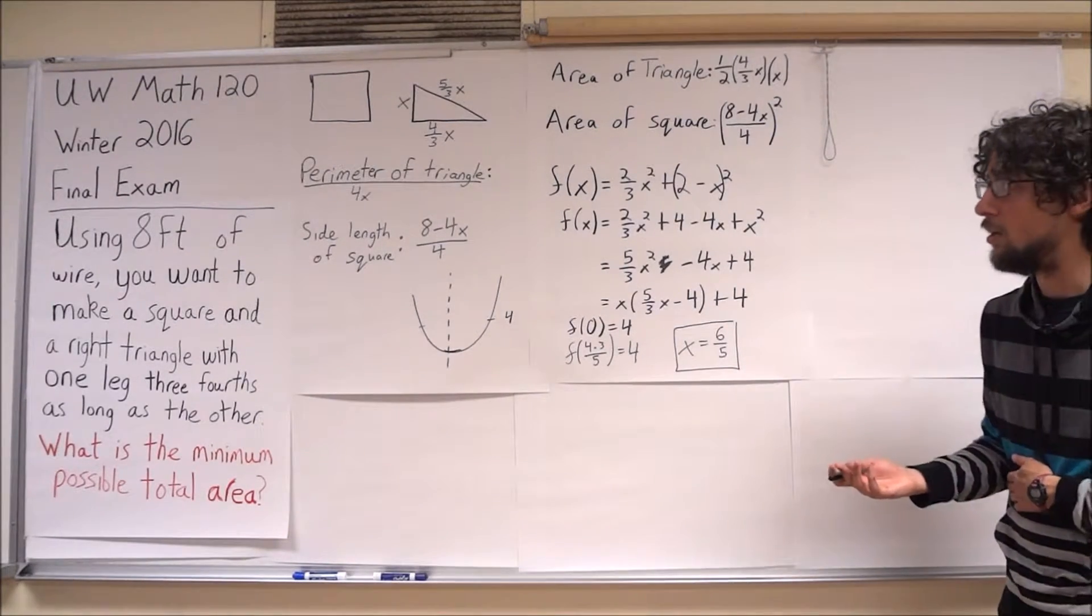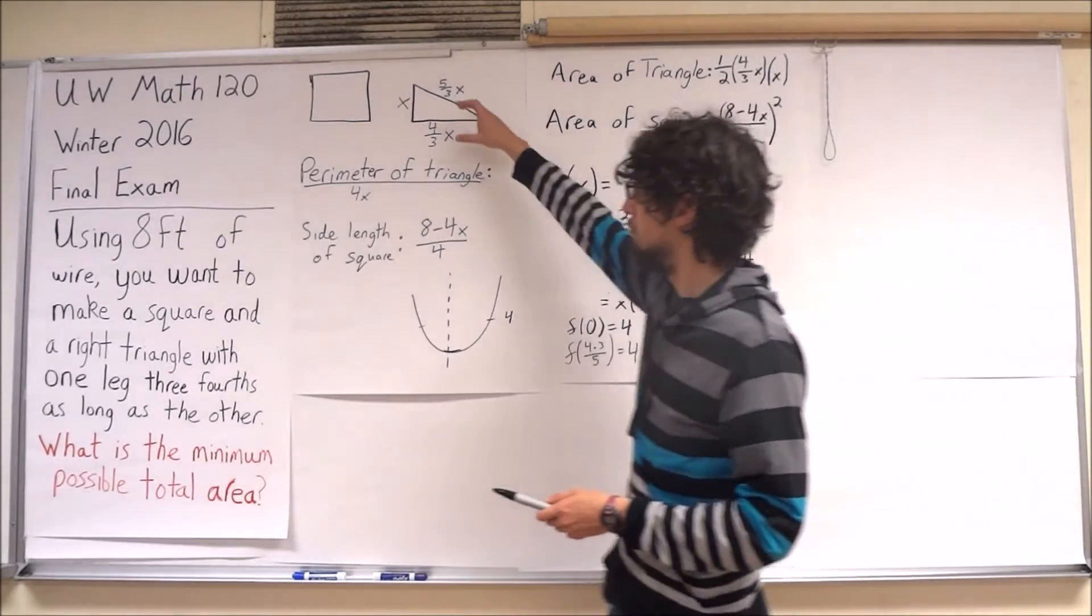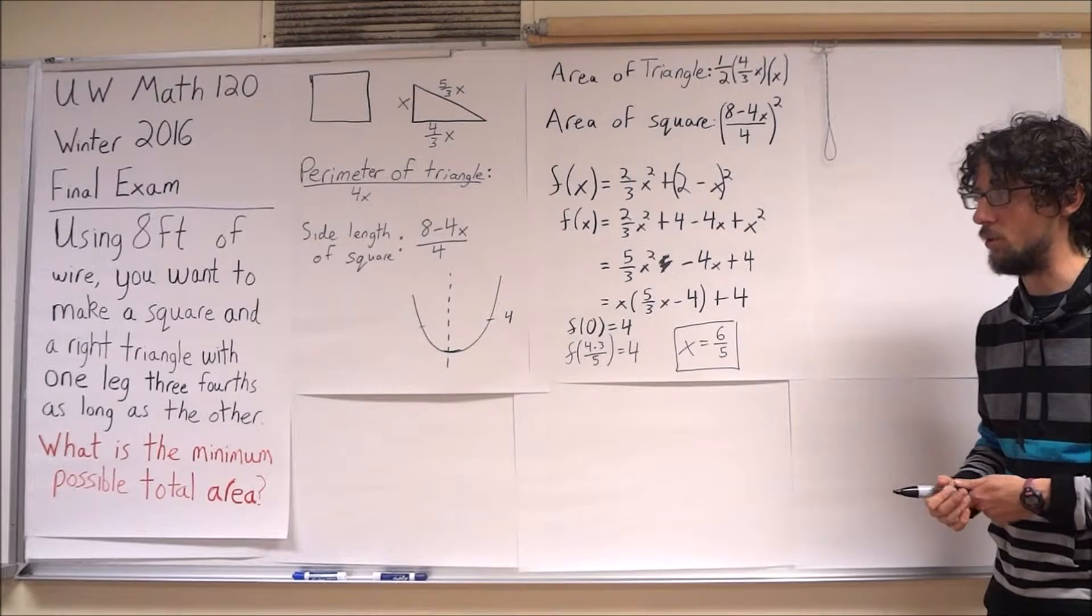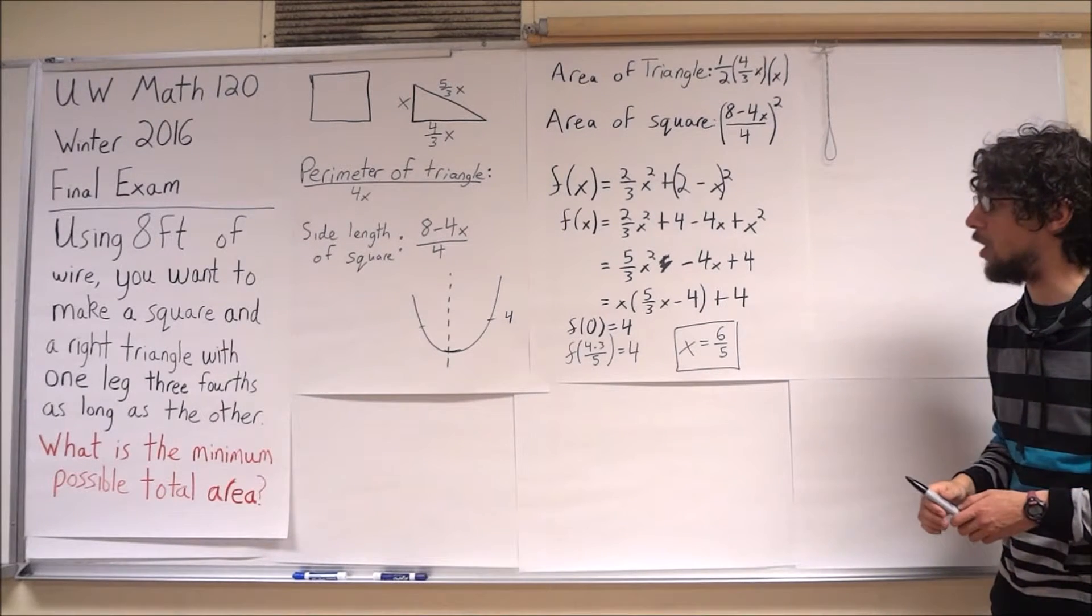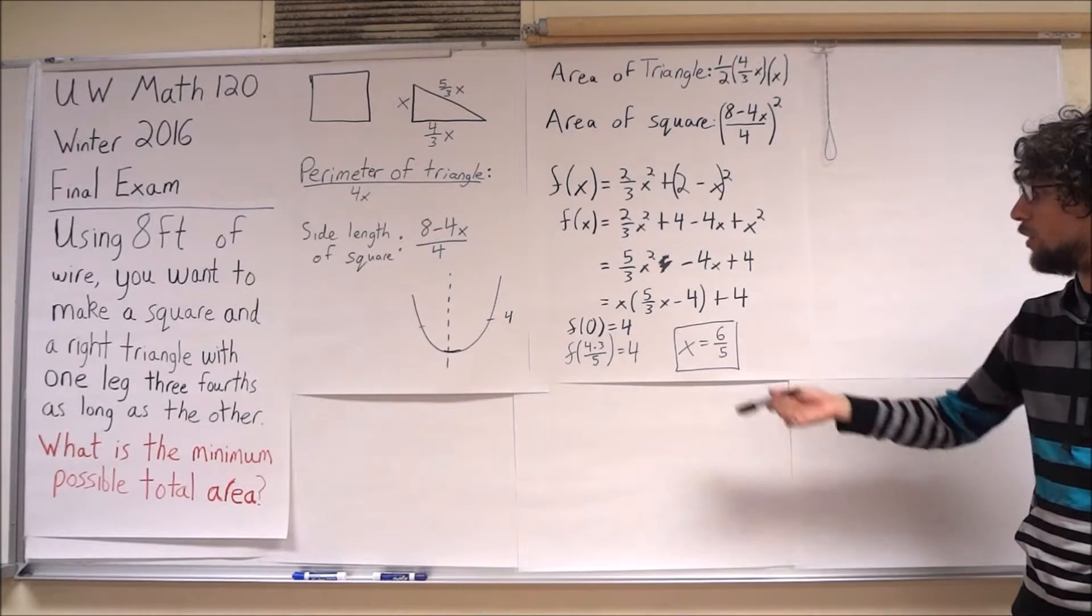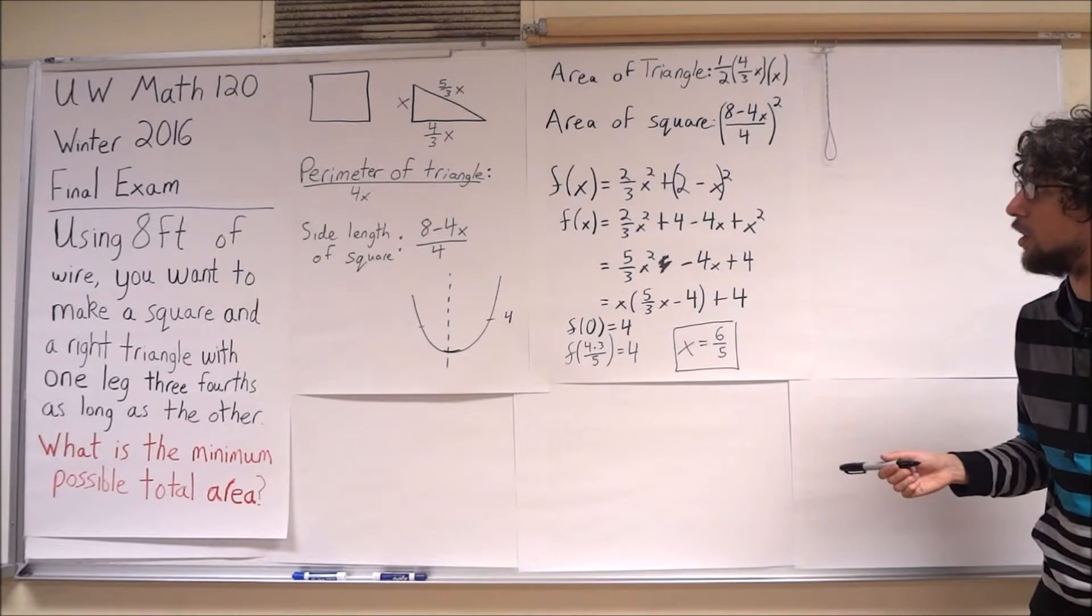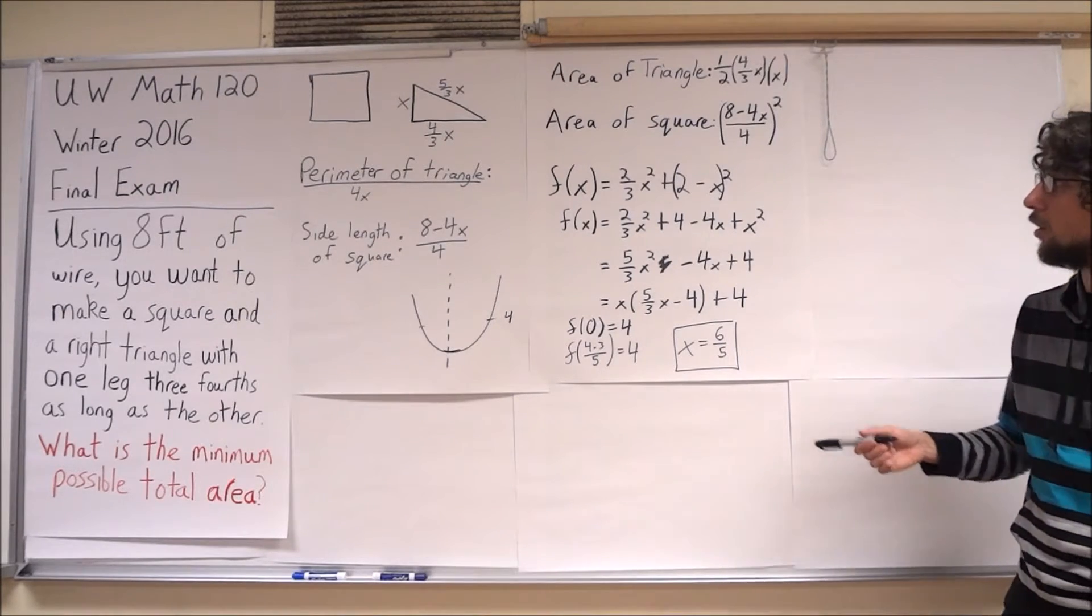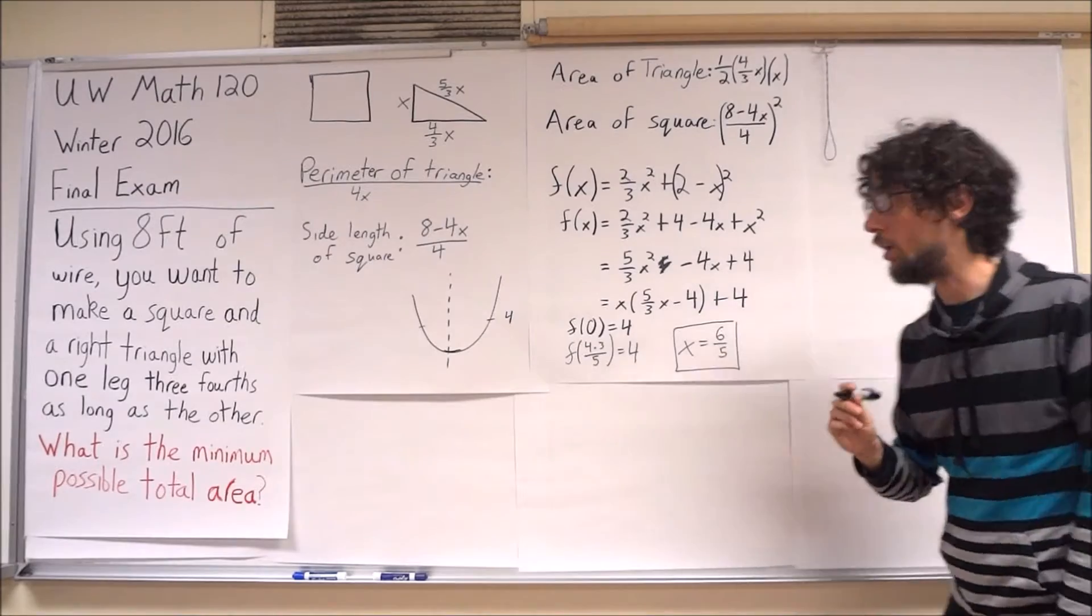So the question asks us not to find the length of the triangle that will give the minimum possible total area, but actually to find this minimum possible total area. So, to finish this question off, what we need to do is simply take this x value of 6/5 and plug it back into our function for the total area.